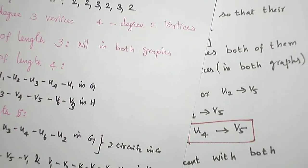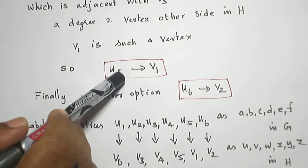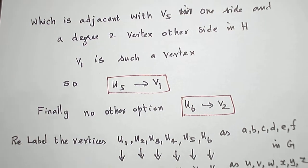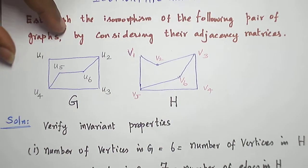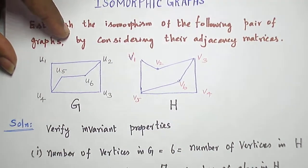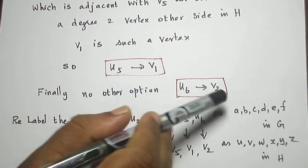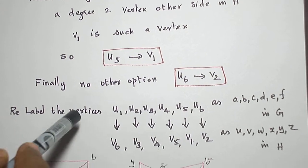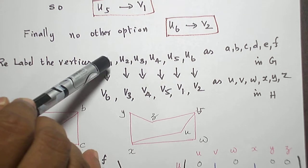That is what we are going to do, U5 to V1. So automatically the other vertex U6, I have no other choice, it has to be mapped to V2. So U6 is mapped to V2.